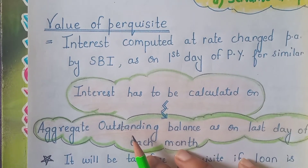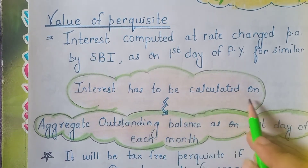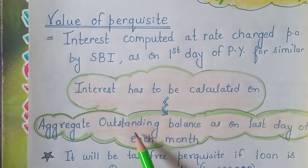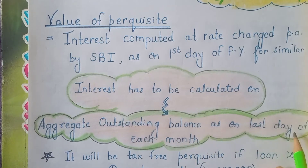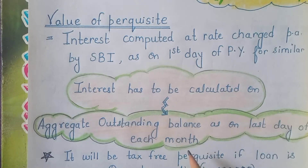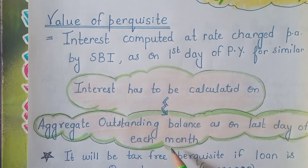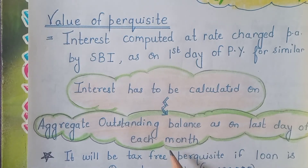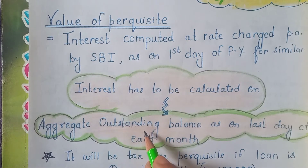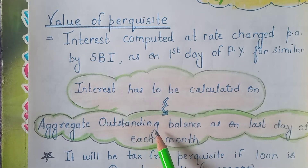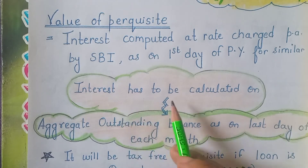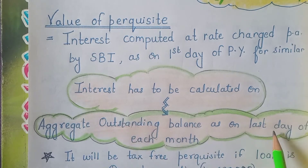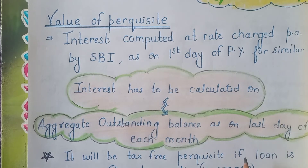On what figure is interest calculated? It is calculated on the aggregate outstanding balance as on the last day of each month. We will find out how much loan amount is outstanding at the end of each month, add up all those figures, and then compute the interest.